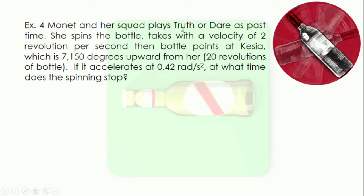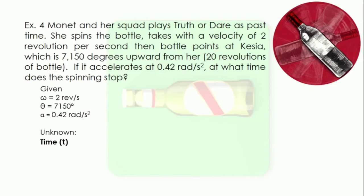Monette and her squad play Truth or Dare as pastime. She spins the bottle with a velocity of 2 revolutions per second; the bottle points at Keisha, which is 7,150 degrees away from her, after 20 revolutions of the bottle. If it accelerates at 0.42 rad per second squared, at what time does the spinning stop? The given is angular velocity of 2 revolutions per second, angular displacement of 7,150 degrees or 20 revolutions, and angular acceleration of 0.42 rad per second squared.